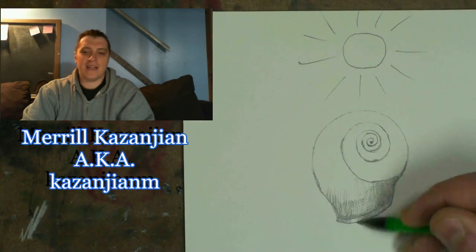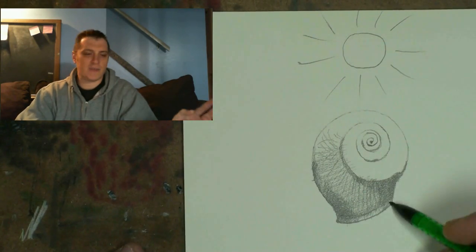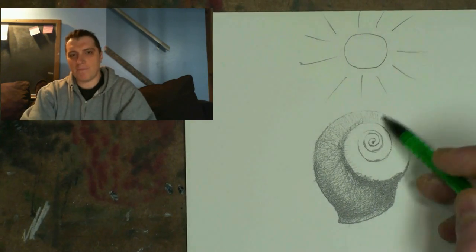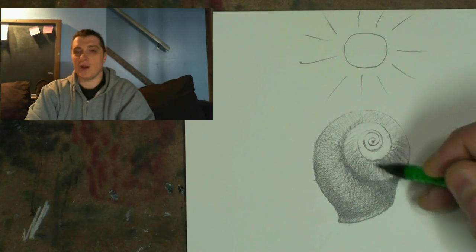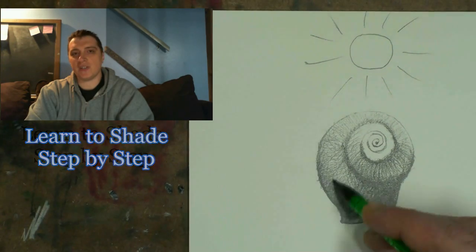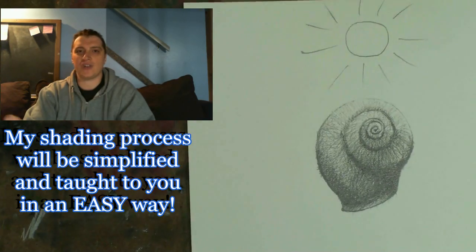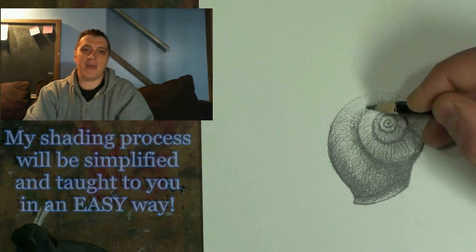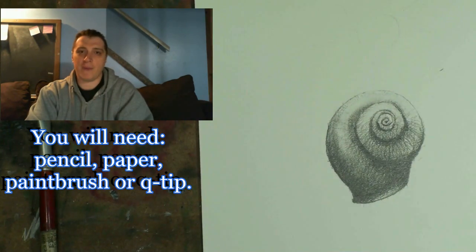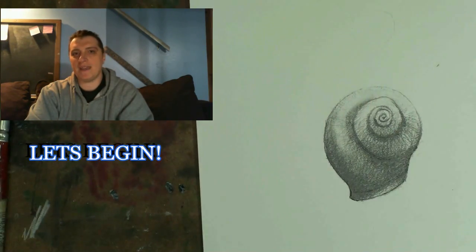Hey everybody, it's Merrill, and today we are going to do a brand new type of step-by-step video, hopefully something brand new and exciting. I usually focus on the lines with my step-by-step instruction. Today, in this video, you are going to learn how to shade step-by-step. We're doing a very simple subject — a shell — so that we can really focus on shading. All you're going to need is a piece of paper, a pencil, and a paintbrush if you have one. If not, just get a Q-tip. You're going to use that to shade.